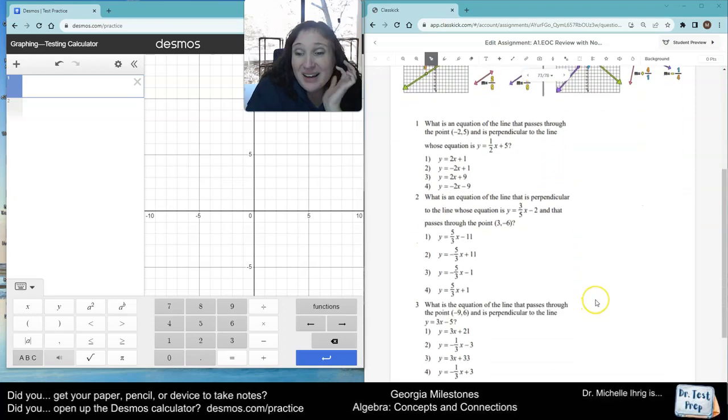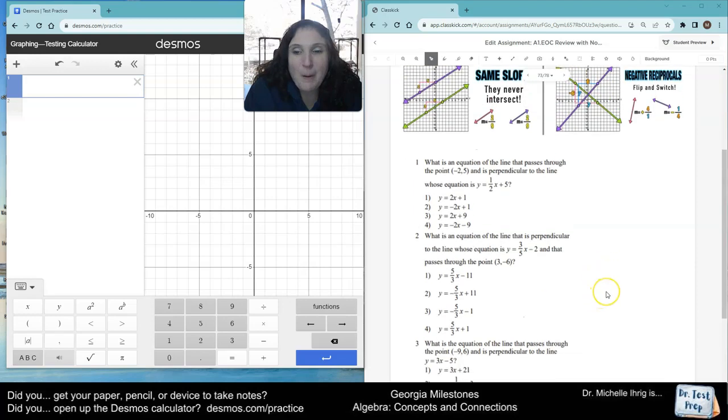I kind of like questions like this because it's super easy. What is an equation of a line that passes through the point negative two, five, and is perpendicular to the line whose equation is y equals one-half x plus five?